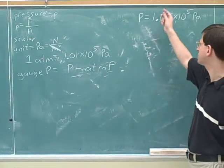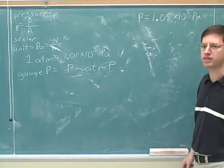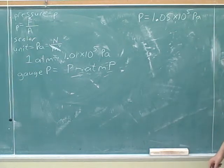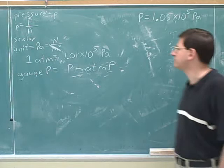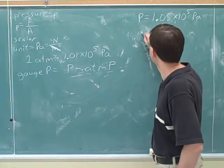Suppose that the actual pressure is 1.05 times 10 to the fifth Pascals. Let's figure out what the gauge pressure would be.